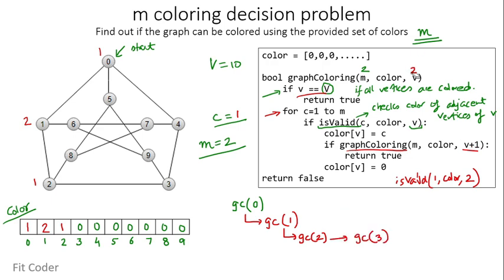We call graph coloring with V=3. The base condition is false. With C=1, isValid returns false because adjacent vertex 2 has color 1. C changes to 2, and isValid is true for C=2, so vertex 3 is colored 2.